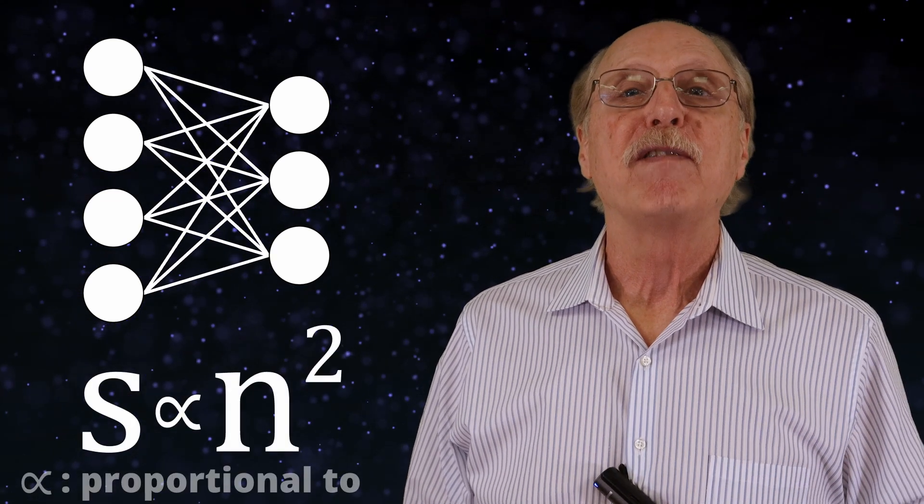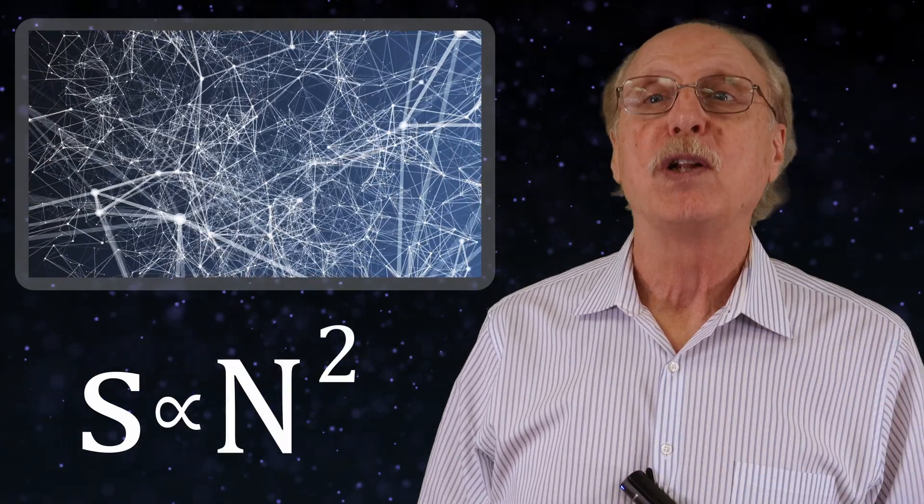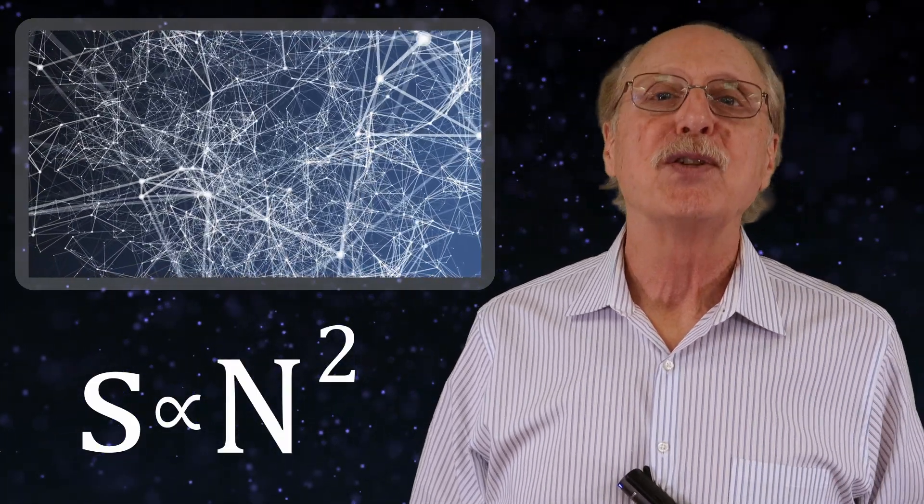In a neural network where each layer is fully connected to the next, the number of synapses increases with the square of the number of neurons in each layer. If any neuron can connect to any other, the number of possible synapses goes up with the square of the total number of neurons, a much larger number.